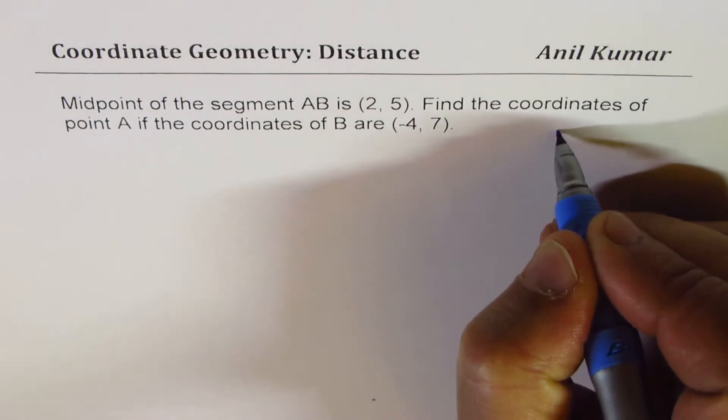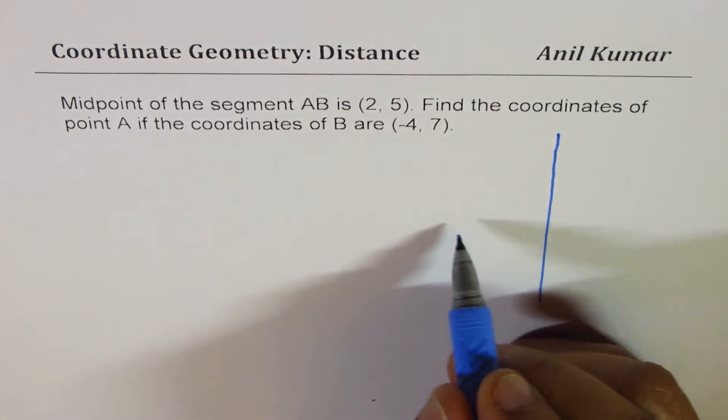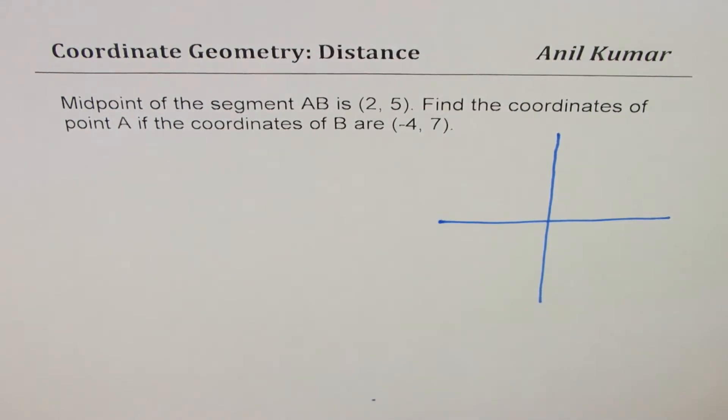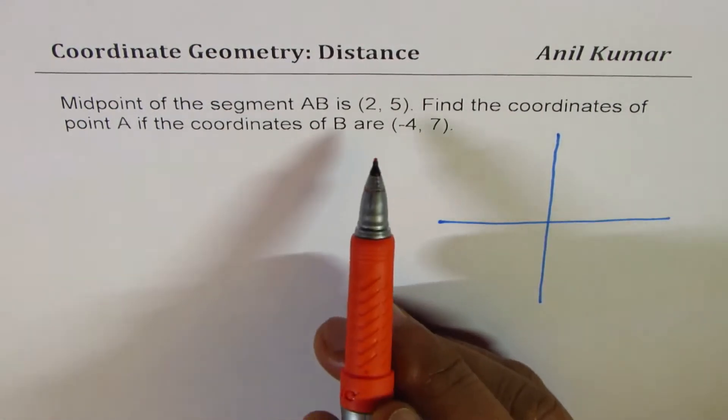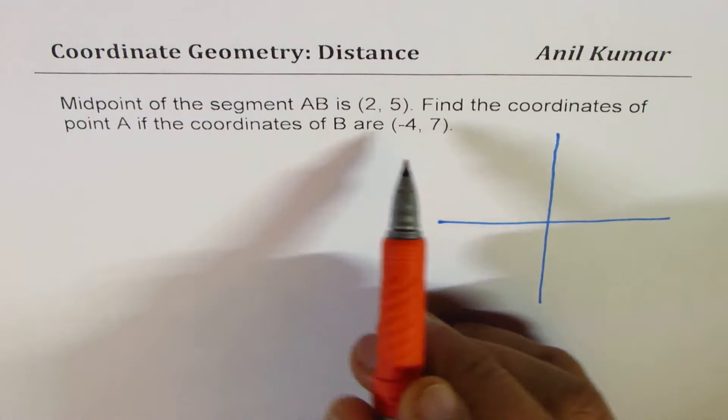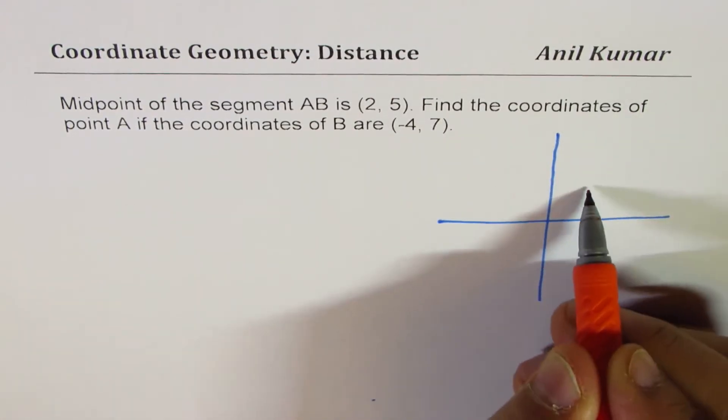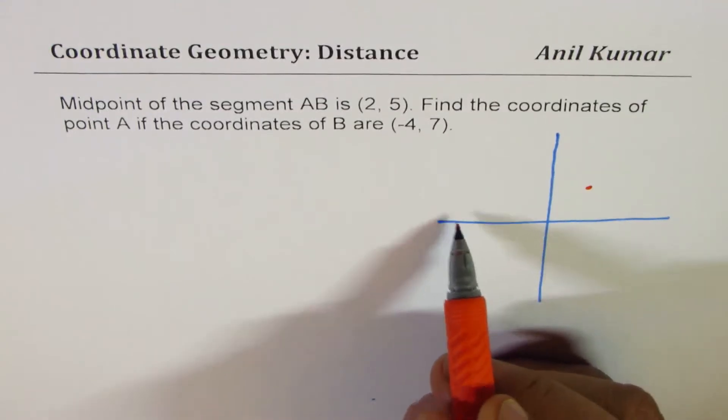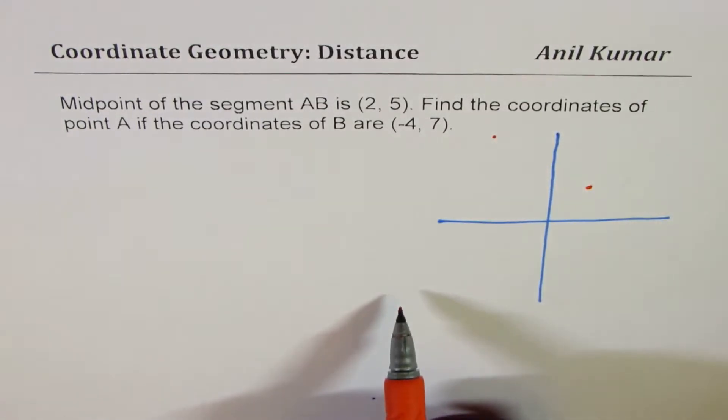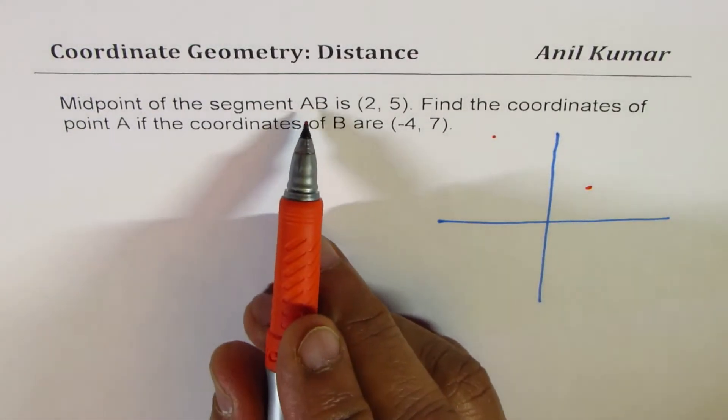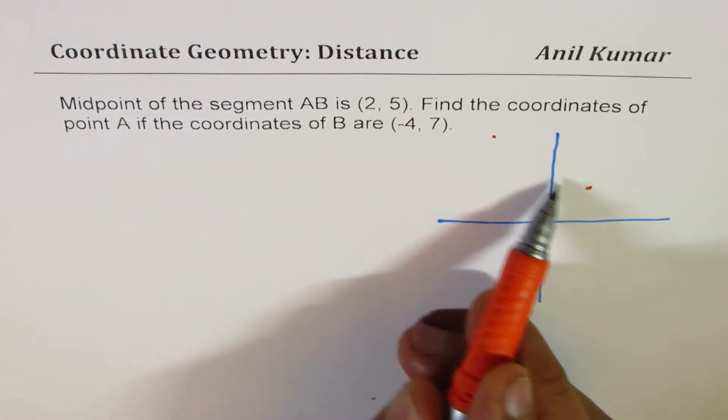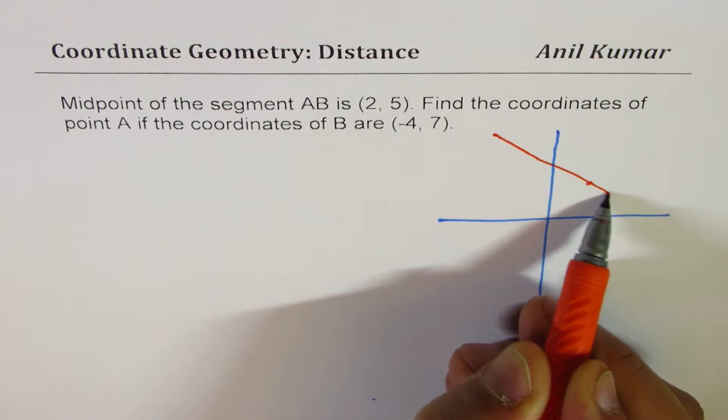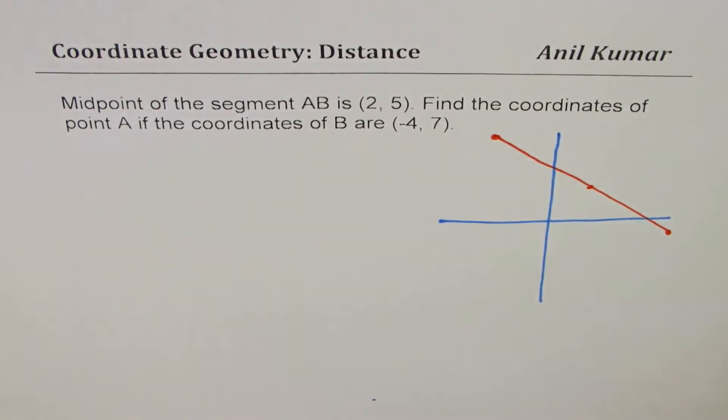Now I will show you two ways of sketching it. One is doing an accurate sketch. So what we do here is that we know the midpoint is somewhere like (2, 5) will be somewhere here. We are given point B (-4, 7), this is somewhere there. And we are looking for point A and we will join this point, these two points, and then carefully extend it like this.